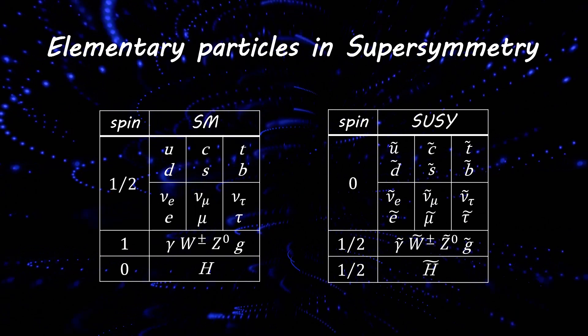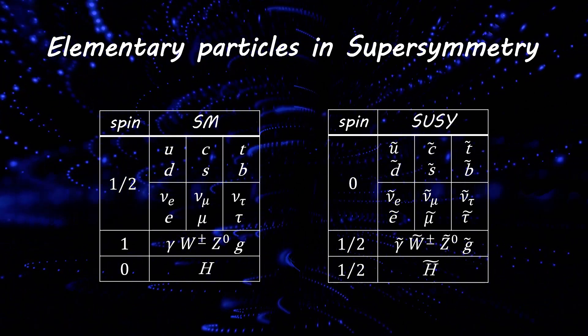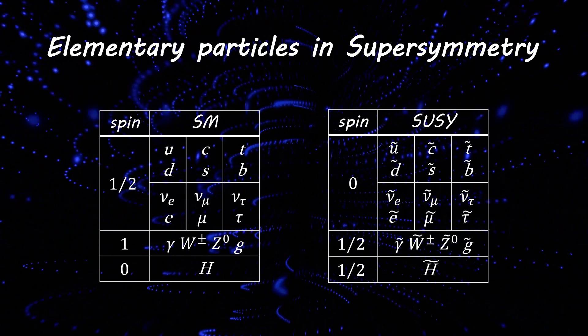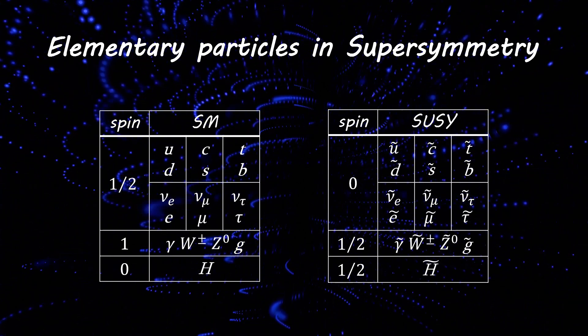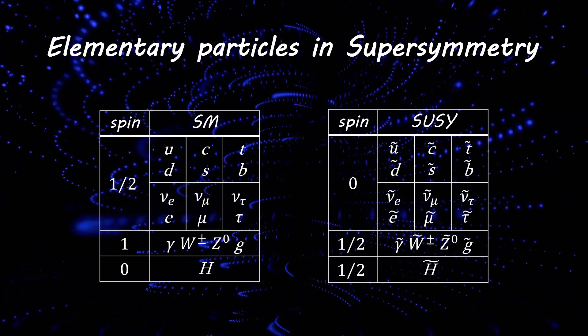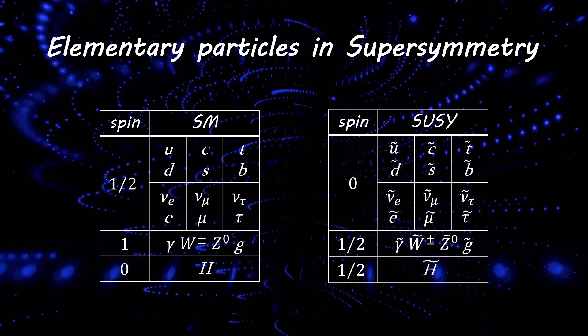Supersymmetry would also link the two different classes of particles known as fermions and bosons. Particles like those in the Standard Model are classified as fermions or bosons based on a property known as spin.